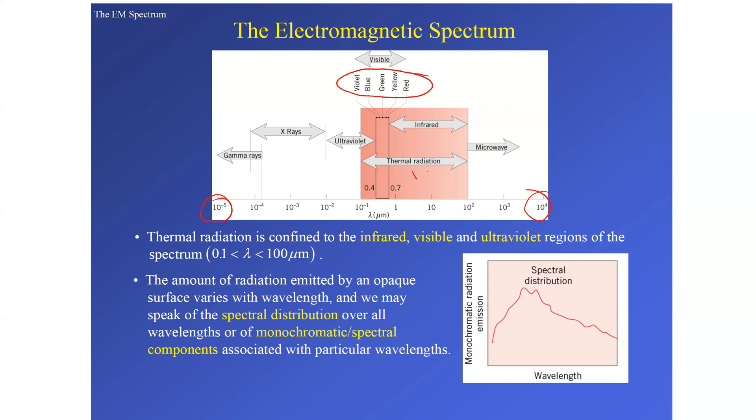Thermal radiation is shown between 10 raised to power minus 1 to 10 raised to power 2. As I have told you earlier, this is the range of the infrared radiations. Thermal radiation is confined to infrared, visible, and ultraviolet regions of the spectrum, and the lambda for it varies between 0.1 to 100 micrometer.